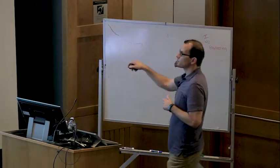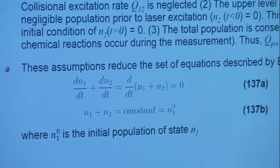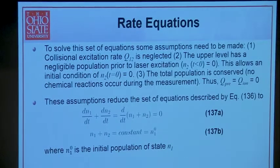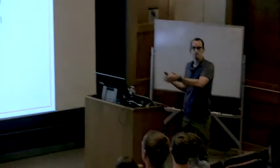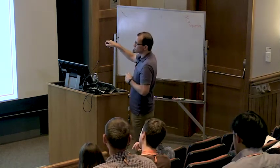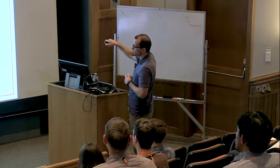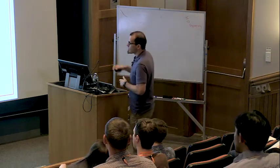With those assumptions we are left with this set of rate equations. We can write N1 with a superscript — this is the initial population. To clarify, this is the population in whatever specific quantum state you're accessing. This is not every molecule in the ground state; it's only a particular rovibrational excitation. We'll get back to that by looking at the Boltzmann fraction in the next lecture. So this is the initial population in that rotational-vibrational state, which will only be a fraction of the total amount of population.